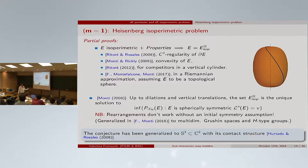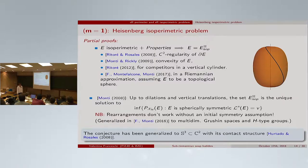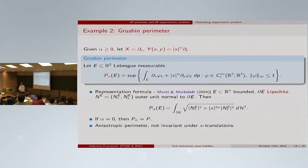The conjecture has been generalized to other structures, for instance the unisphere in C^2 with its contact structure — this is hard and open. Moving to the Grushin case, a two-dimensional Sub-Riemannian structure, things are much easier and one is able to classify isoperimetric sets. Let me introduce the notation for the Grushin plane.